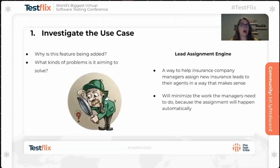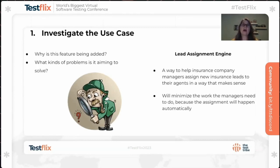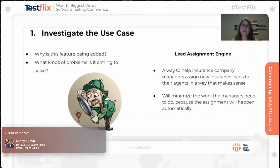Step one is to investigate the use case. Ask yourself: why is this feature being added? What kinds of problems is it aiming to solve? For my real-world example, we're going to be talking about a feature called the Lead Assignment Engine. This was a way to help insurance company managers assign new insurance leads to their agents in a way that made sense. It minimized the work that the managers needed to do because the assignments would happen automatically.